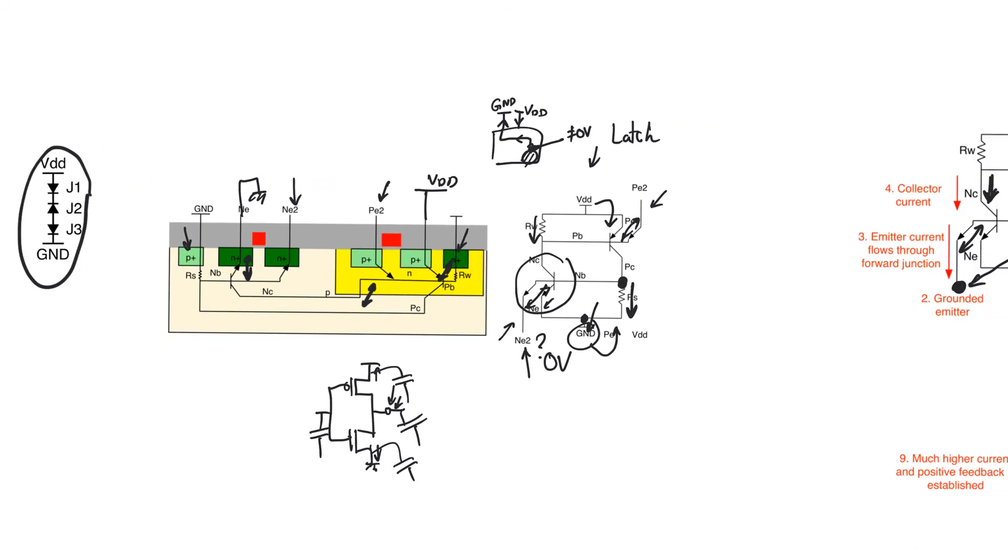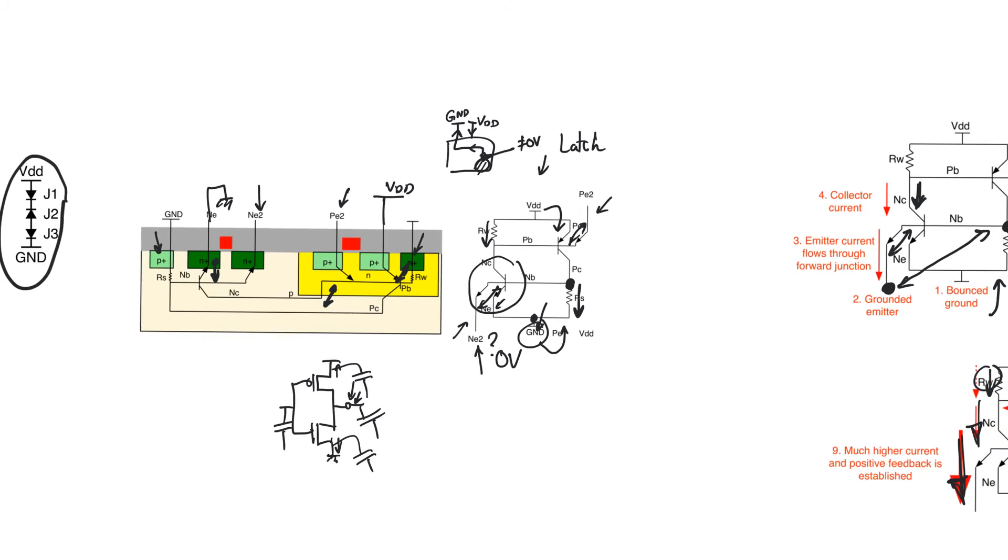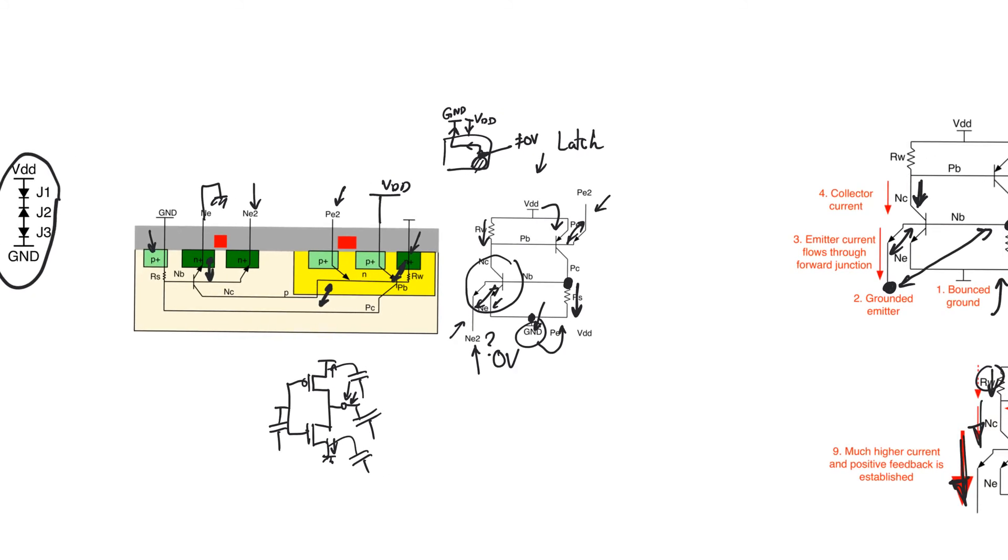The other way we could prevent latch up is by reducing transient current. If we reduce transient current, we reduce the amount of bounce of ground and supply. And we can reduce transient current, for example, by turning on the circuit a section at a time. So, we can turn on this module, then this module, then this module. It will take longer to turn on the circuit, but it's a one-time event, and it reduces the total current at any one instance that is flowing into the supply or ground pins.